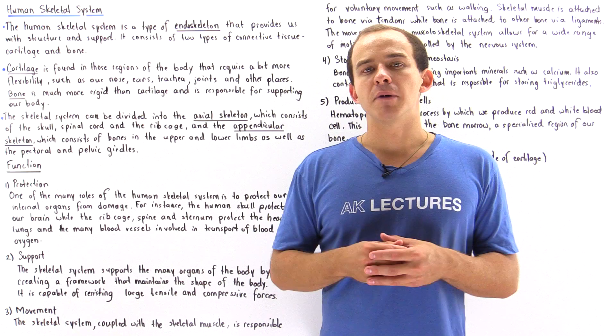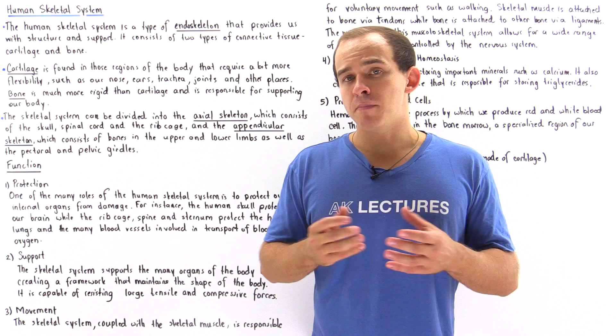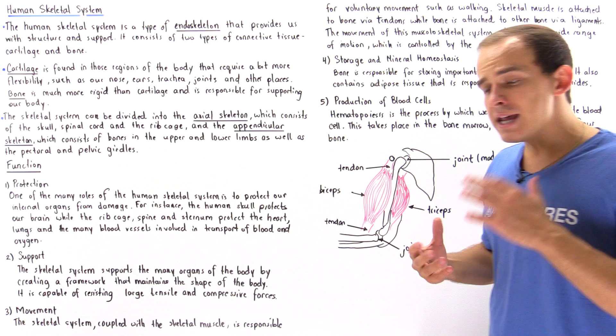Now what exactly is the difference between bone and cartilage? Well, cartilage is a much more flexible type of connective tissue, and that's exactly why cartilage is found in those regions of the human body that require a bit more flexibility. For example, cartilage is found in the outer portion of the ear, in the nose, in the trachea, as well as in our joints and other parts of the body.